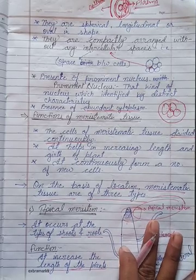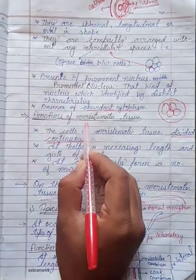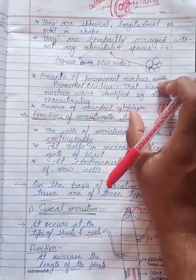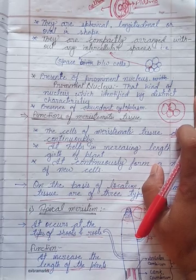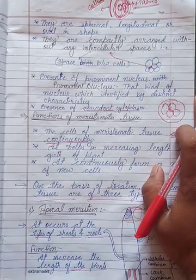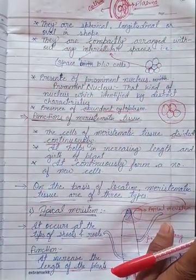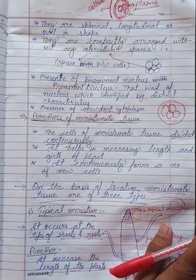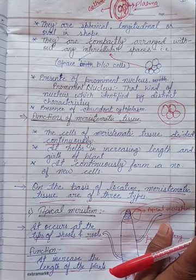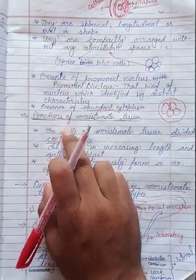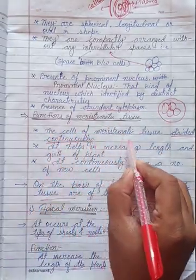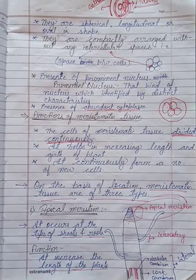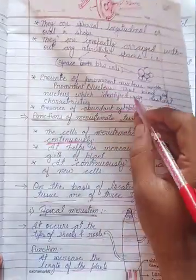Now for the functions of meristematic tissue. The function of meristematic tissue is that it divides continuously. It continuously divides to form different and new kinds of tissue. It also helps in increasing the length and width of the plant. It continues to form a number of new cells, which elongate the plant tissue.